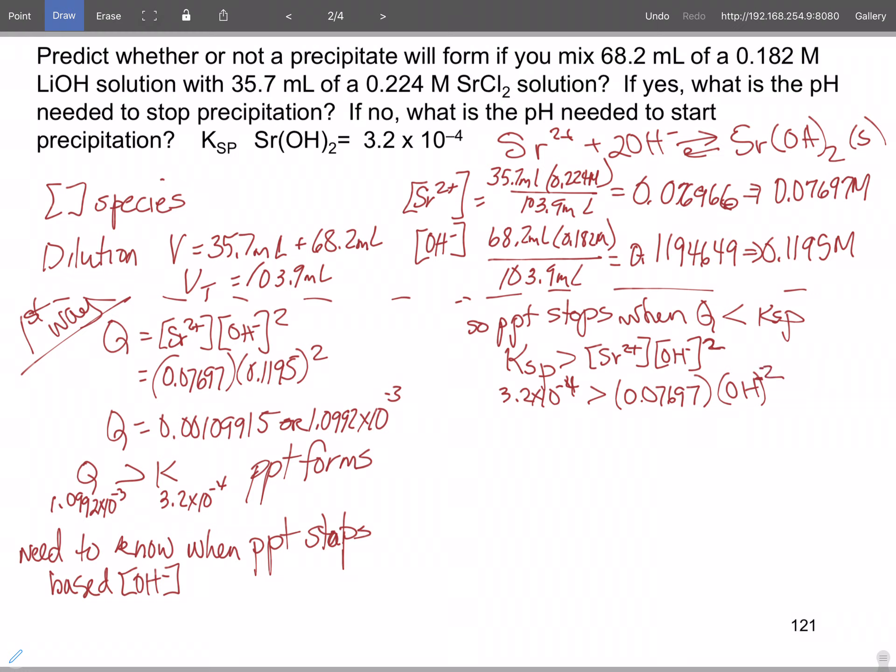So that means that your hydroxide ion squared is going to be less than 0.00415746, which means your hydroxide ion concentration must be less than 0.06447839. So we're going to use 0.06448.